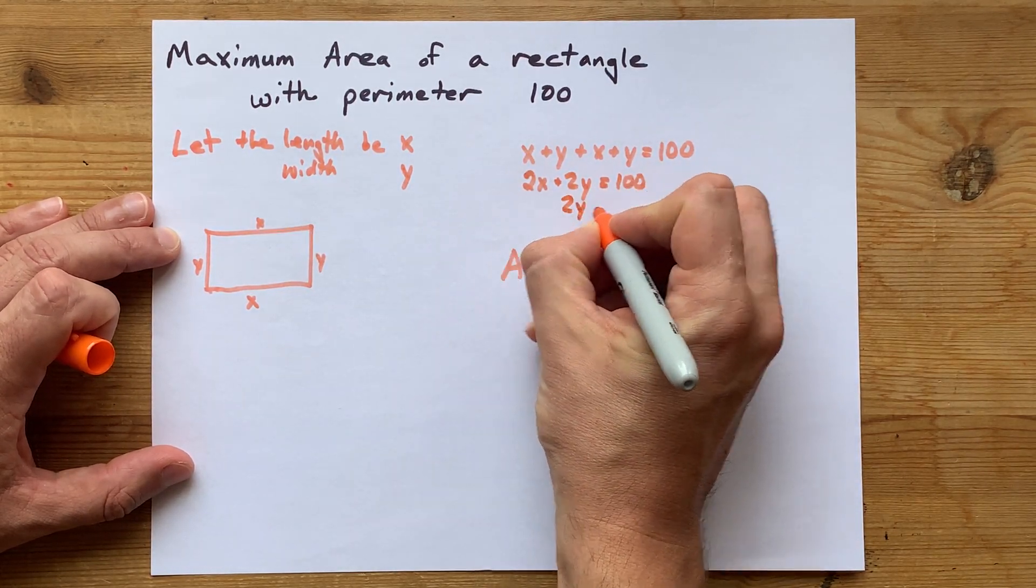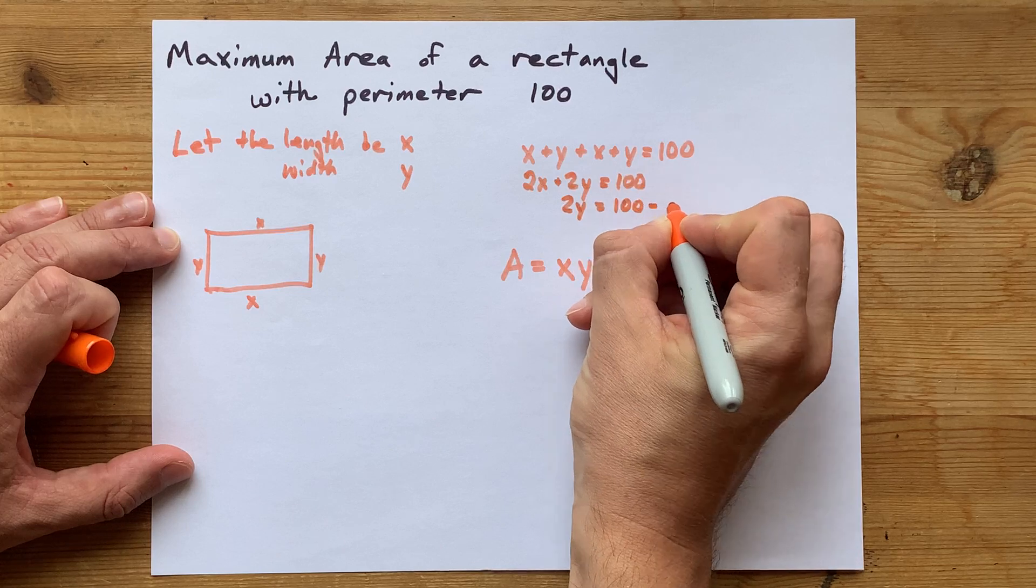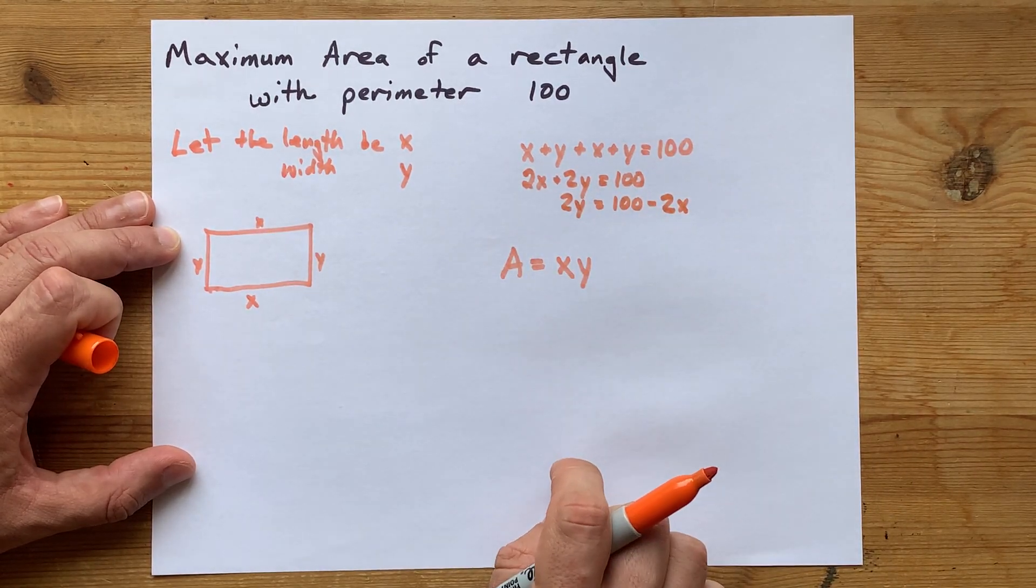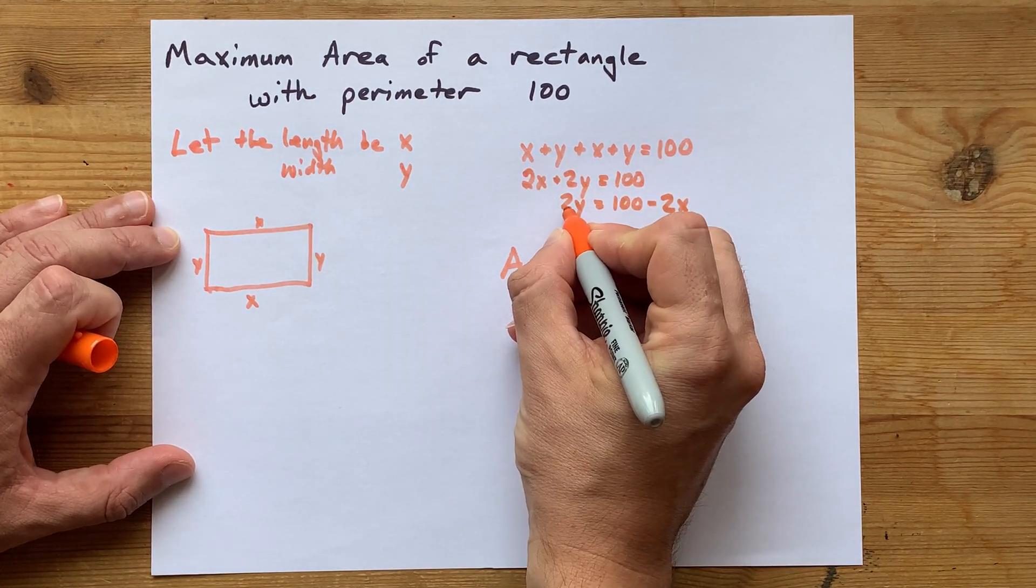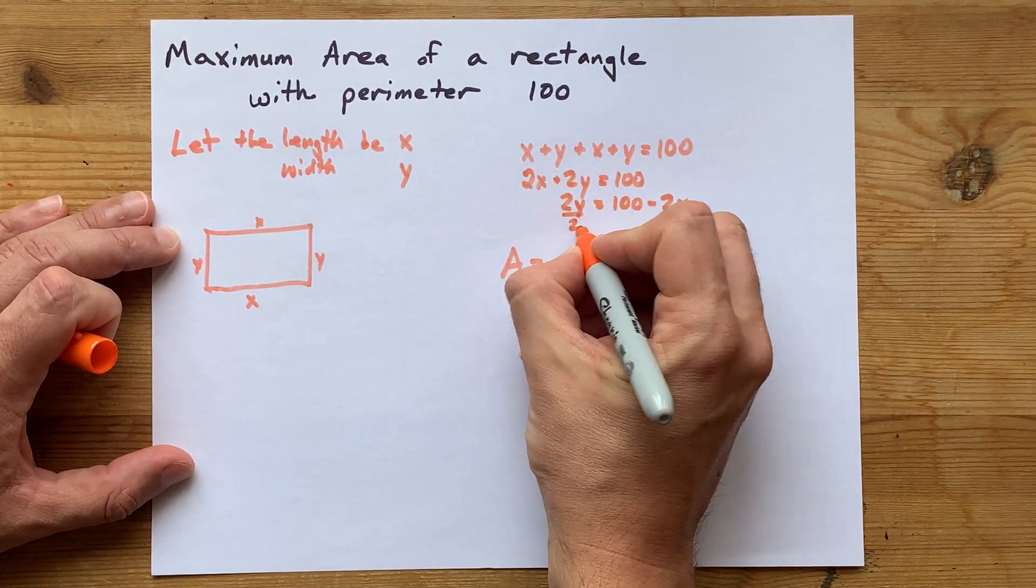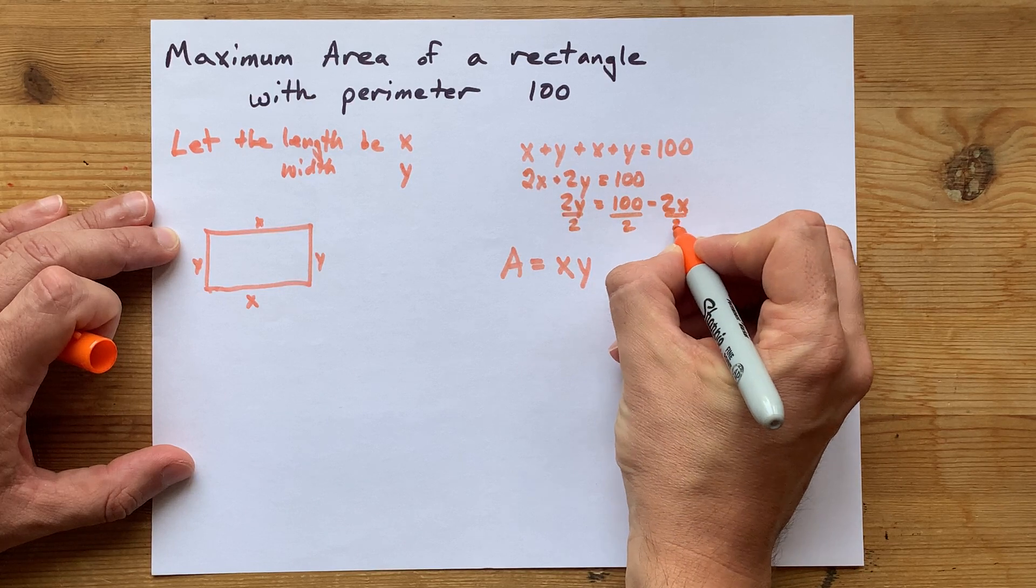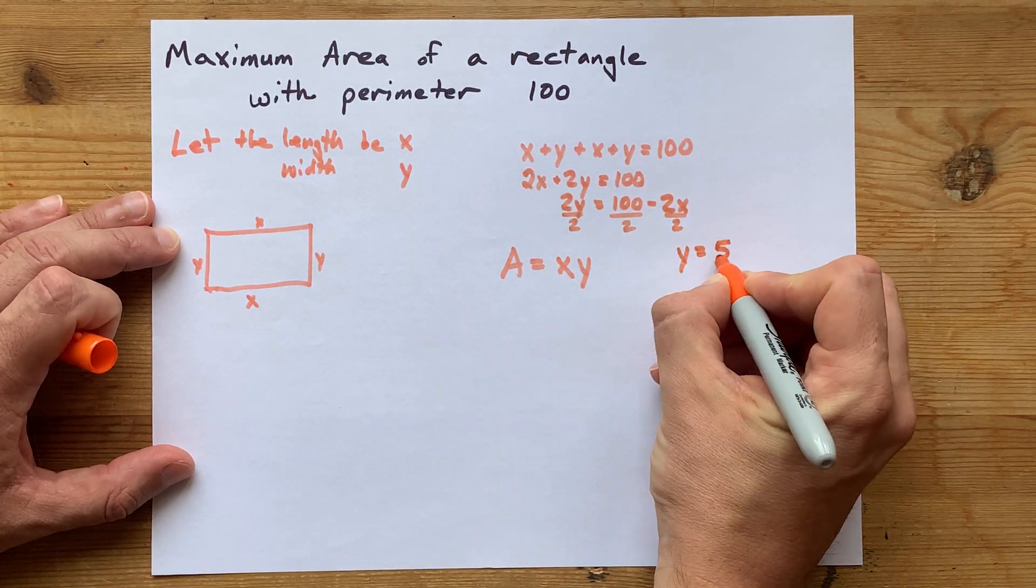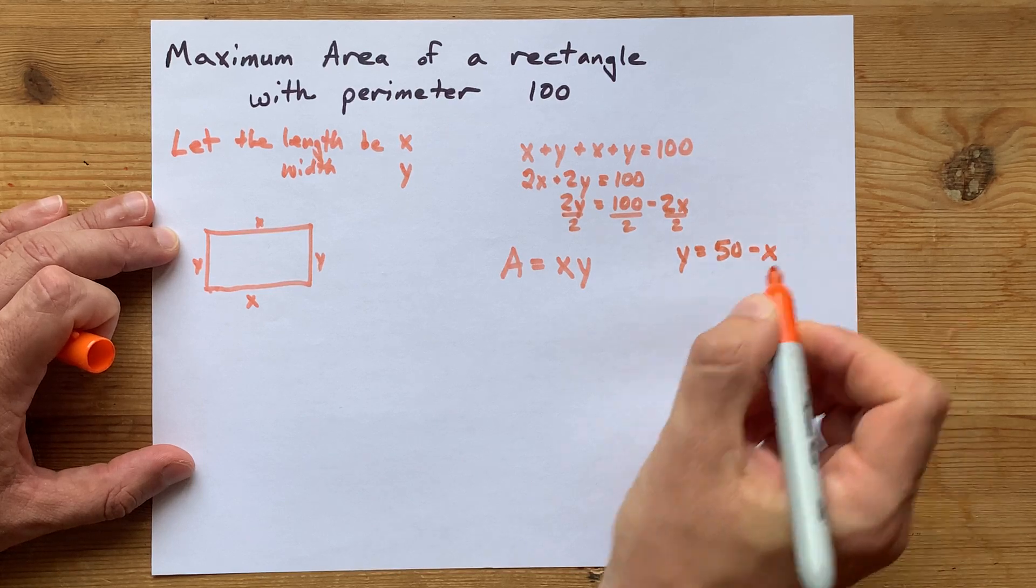See how that moved over there to become minus 2x. And then, to get rid of the 2 that's multiplied by y here, I'm going to divide everything by 2. That gives me y equals 50 minus x.